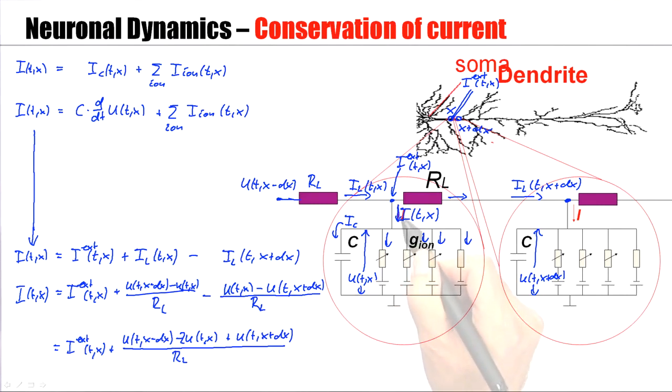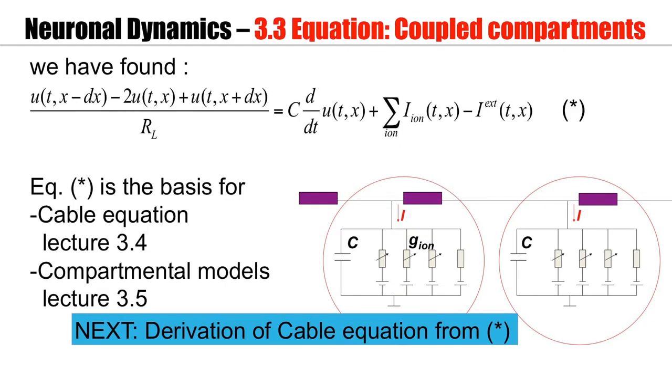This is my expression of the total current flowing down here. But the same current is also described by this first equation up here. So I have an equality and I can copy the start equation C times d dt u of t, x plus the sum of all these ion channel currents at t and x. Now this is the final equation which describes the current flow along the dendrite between different segments of the dendrite and the current flow through the membrane, through the membrane into the outer extracellular space.